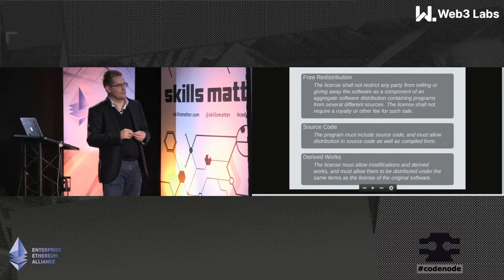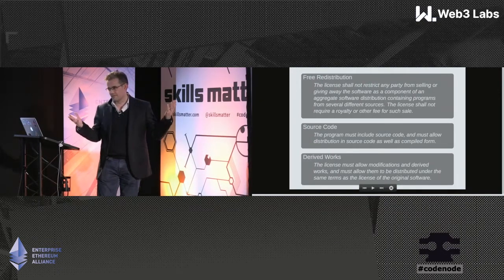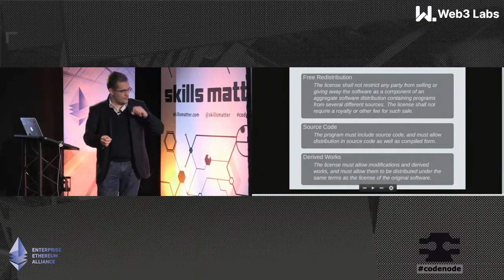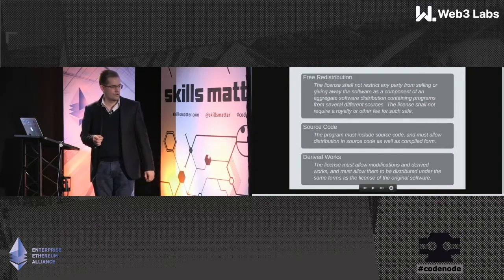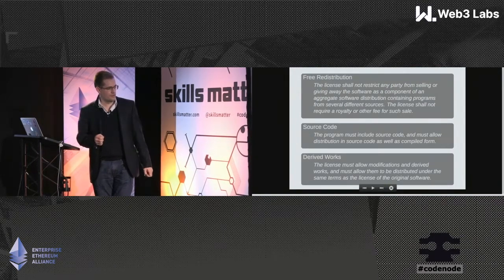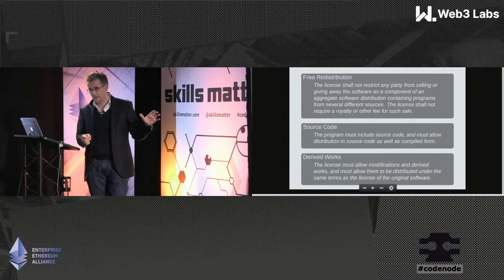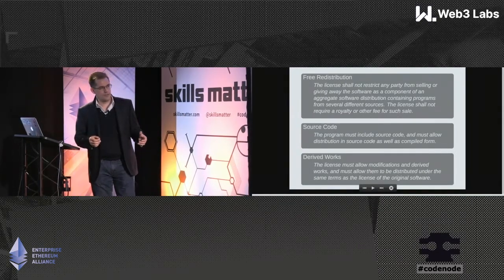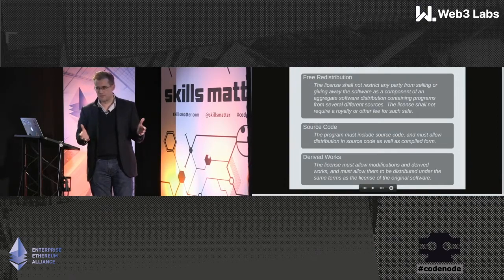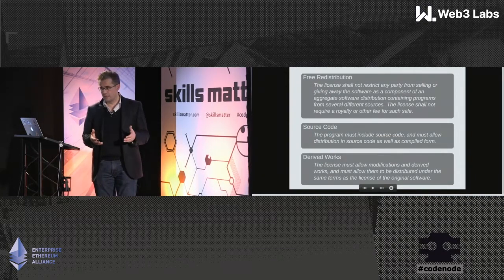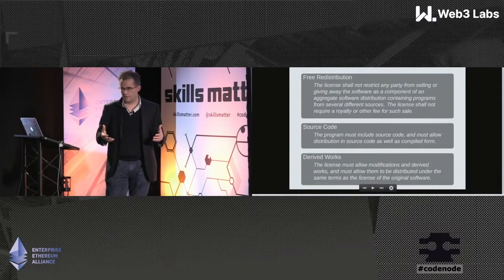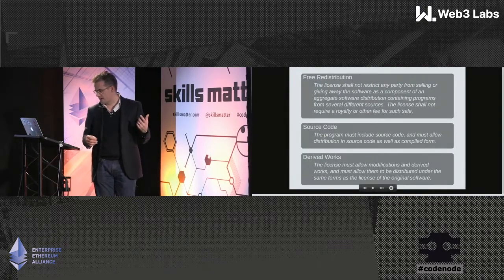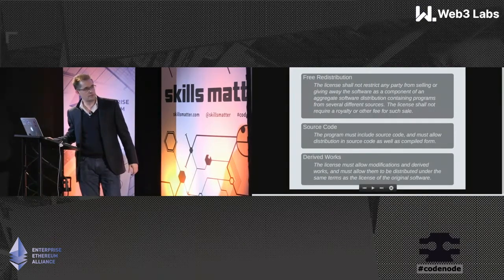Source code: the program must include source code and must allow distribution — this kind of follows from the very words 'open source,' obviously. And derived works: the license must allow for modifications and derived works and must allow them to be distributed under the same terms as the license of the original software. This is a really important aspect of open source because software is a living thing. It tends to evolve in directions that aren't foreseeable at the beginning, not necessarily under the control of the originators. It forks and merges with other projects. The derivative nature of open source is essential to the concept.